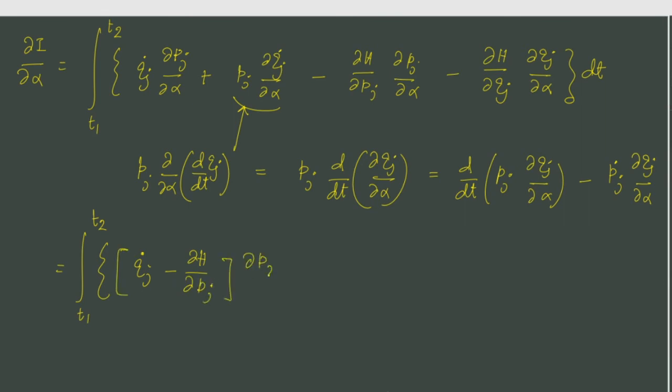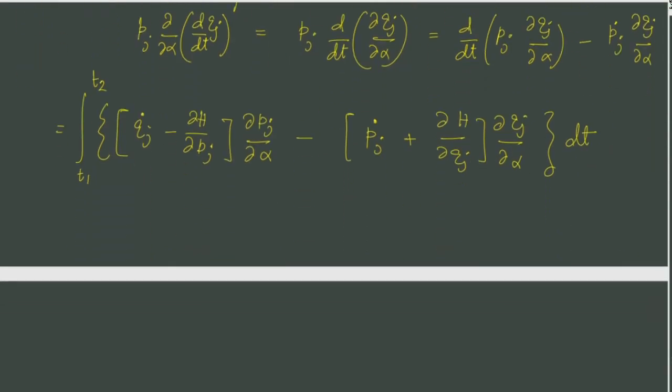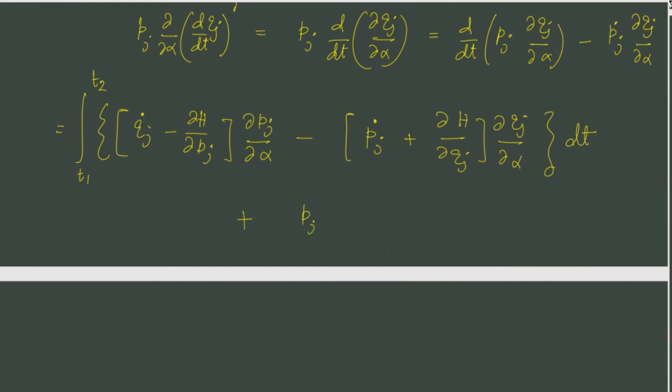So we will have if we collect the terms, we will have Qj dot minus del H del Pj. This is basically the coefficient of del Pj del alpha. And similarly, we will have this particular plus term we got from the replacement. This is the term plus we have evaluated at the end point.